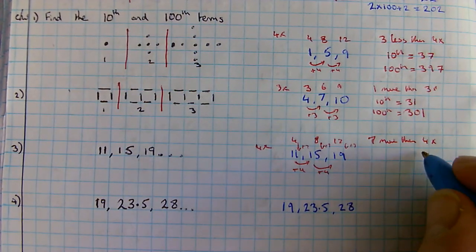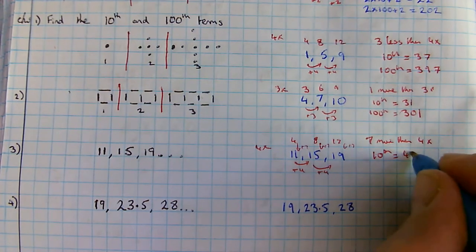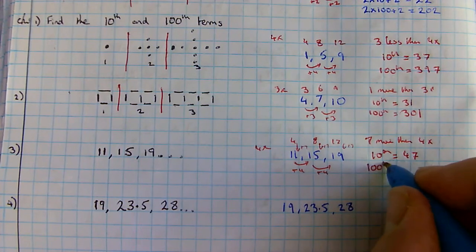Four times ten is forty, plus seven is forty-seven. Four times a hundred is four hundred, plus seven is four hundred and seven.